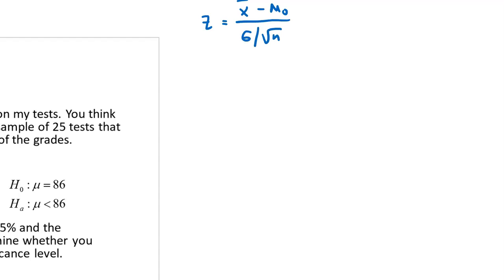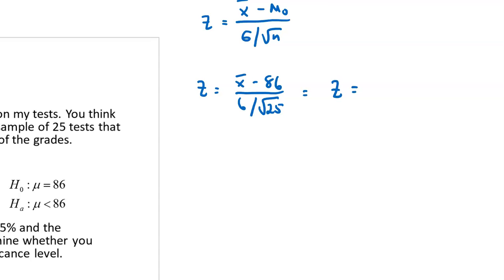Setting that up with our numbers: I claim the mean is 86, the standard deviation is 6, and the sample size is 25. So Z equals the sample mean minus 86, over 6 divided by the square root of 25. That gives us 6 divided by 5, which is 1.2.